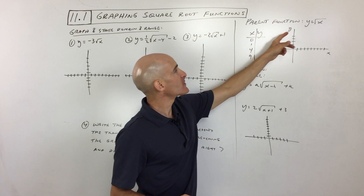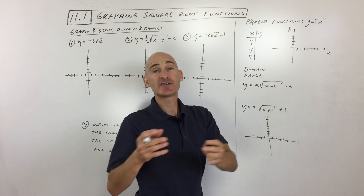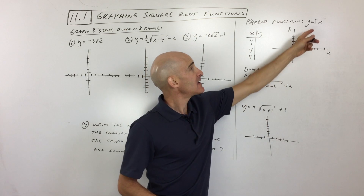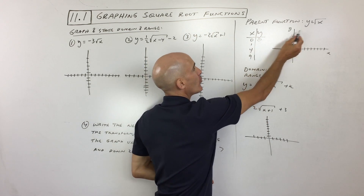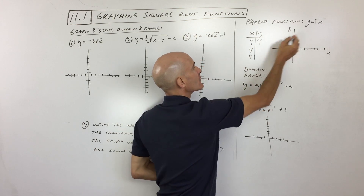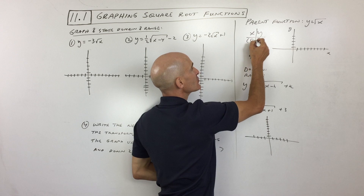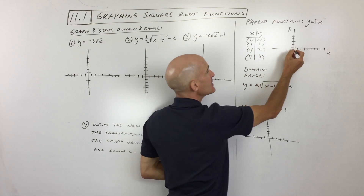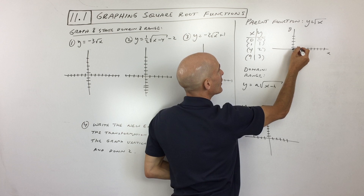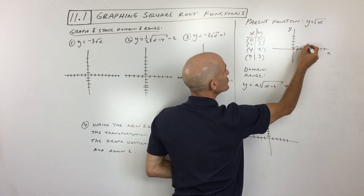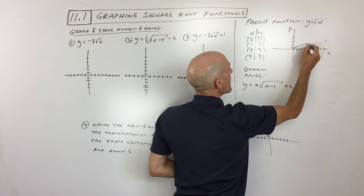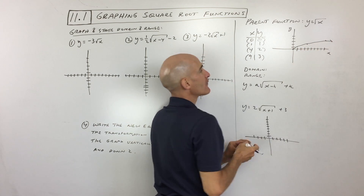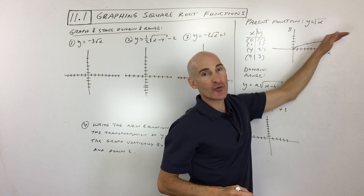First, we can't take the square root of a negative number — what times itself is a negative number? We can take the square root of zero; square root of zero is just zero. Making a table: if I put one in, the square root of one is one. If I put four in, square root of four is two. And if I put nine in, the square root of nine is three. So now if we plot these points: zero-zero is right here, one-one is here, four-two is here, and nine-three is here.